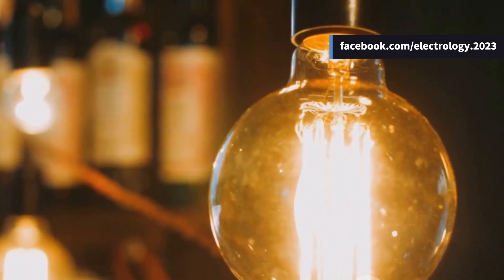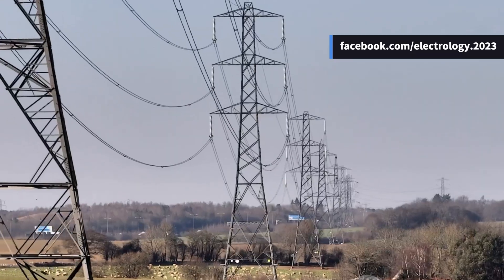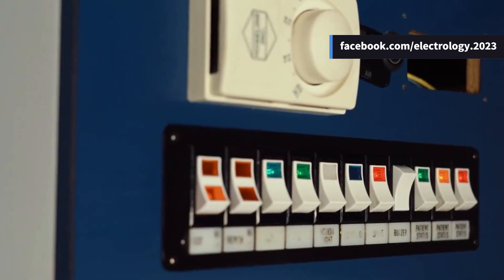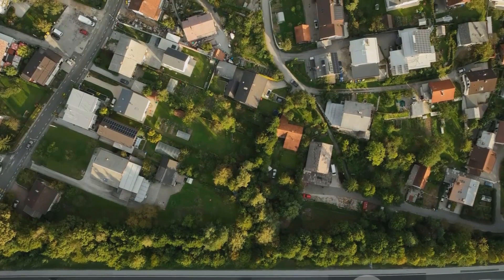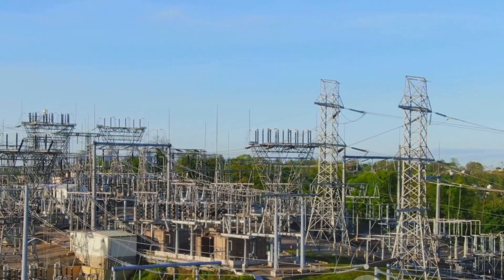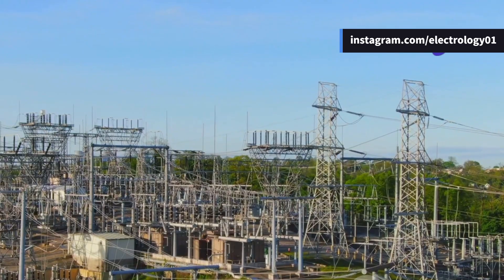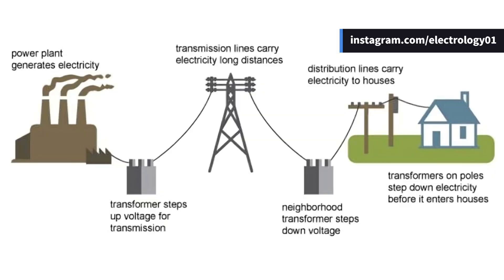Have you ever wondered how the electricity that lights up your home travels hundreds of kilometers before reaching your switchboard? It's a journey that starts from the power plant and ends at your home, passing through a vast and complex network called the power system. Today we're going to explore this entire journey using a powerful tool: the single line diagram — the most simplified yet highly effective way to understand how electrical power flows from generation to consumption.